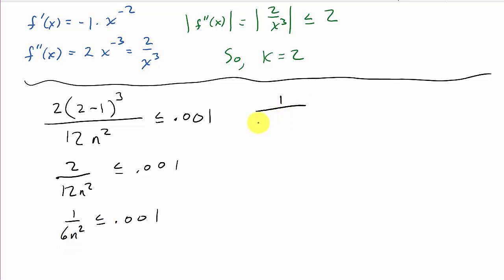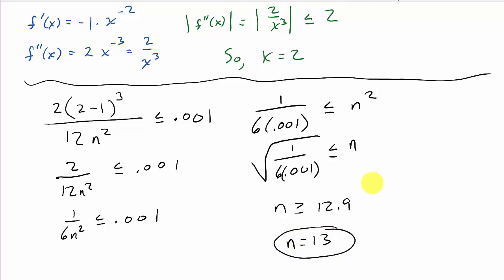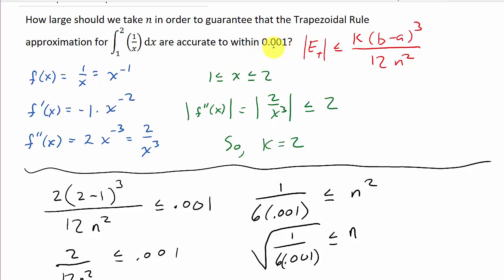And then the 0.01 gets moved down here. So, that's going to be 1 over 6 times 0.001 less than or equal to n squared. All right? So, I've got n is greater than or equal to the square root of 1 over 6 times 0.001. So, that means n is greater than or equal to, and then when I punch this into my calculator, I get 12.9. So, n has to be greater than or equal to 12.9. So, that means we'll take n to be 13.